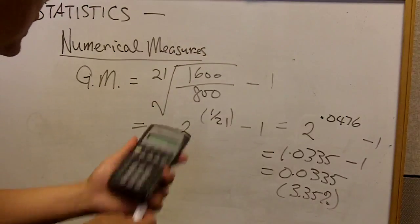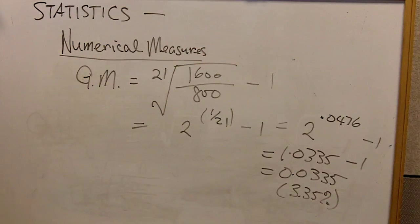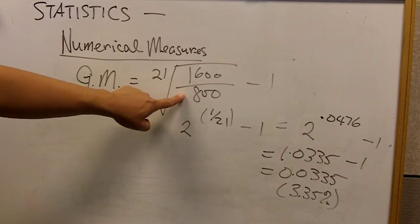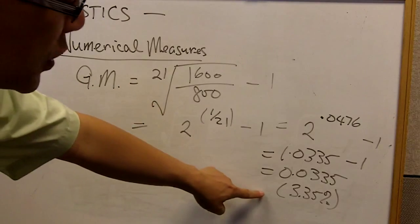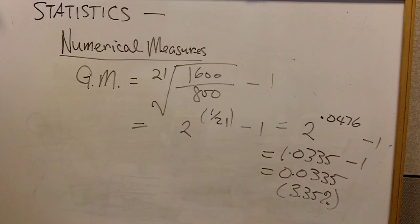Going back to the example, we are saying that between 1993 to 2014, the student population has grown on an average 3.35% a year for us to go from 800 to 1,600.